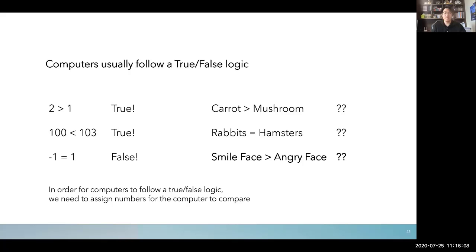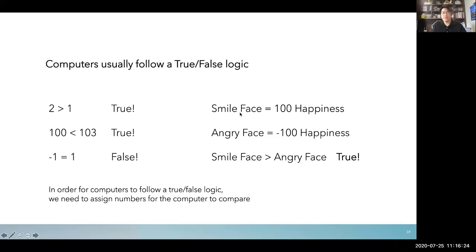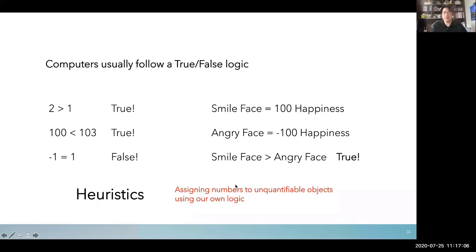In order for computers to compare unquantifiable things, we need to assign numbers — this is where heuristics comes in. For example, I assign a smiley face 100 happiness and an angry face negative 100 happiness. Then '100 is larger than negative 100' is true — the computer can evaluate it. Heuristics is basically assigning numbers to unquantifiable objects using our own logic.